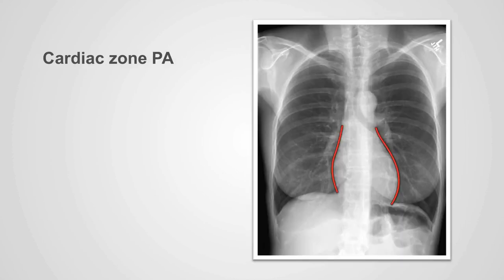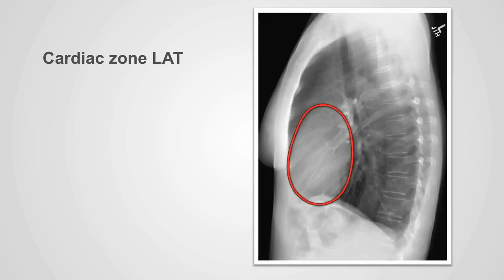The cardiac zone lies in the anterior and inferior part of the mediastinal zone. On both the PA and lateral x-rays, the outer edges of the zone are formed by the heart, pericardium, and mediastinal fat. The specific heart chambers that contribute to the visible edges will be discussed in a future presentation on the heart. The cardiac zone on the lateral x-ray is identified anteriorly and inferiorly.